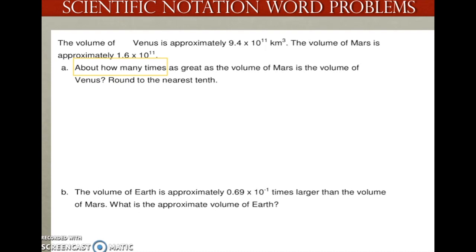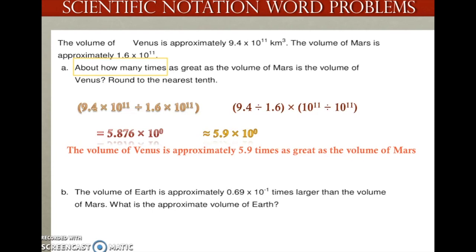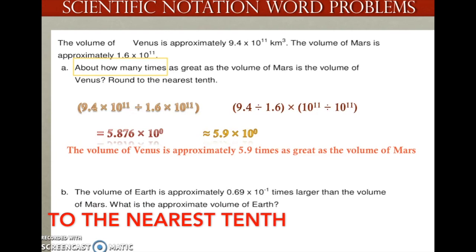We can look at 'about how many times' as our keyword, so let's set that up. I have 9.4 times 10 to the 11th divided by 1.6 times 10 to the 11th. Let's pull that apart: 9.4 divided by 1.6, times 10 to the 11th divided by 10 to the 11th. When we have the same base and we're dividing, we subtract the exponents, which leaves us with 5.876 times 10 to the 0th power — approximately 5.9 times as great.